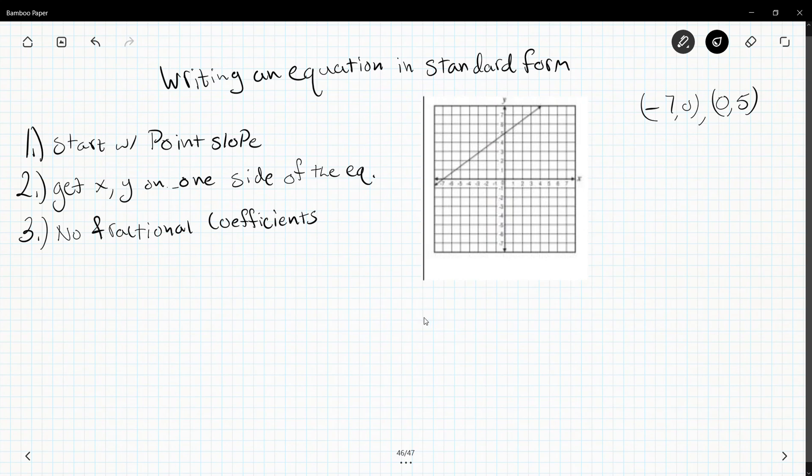Alright, so for turning an equation into standard form, we need to start by writing it in point-slope form. I've already started by giving the x and y intercepts for this graph. All I need to do is find the slope first.